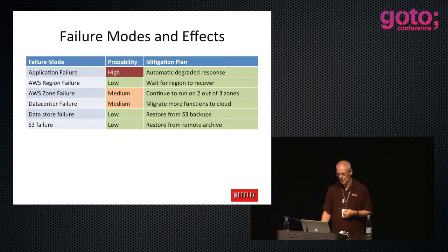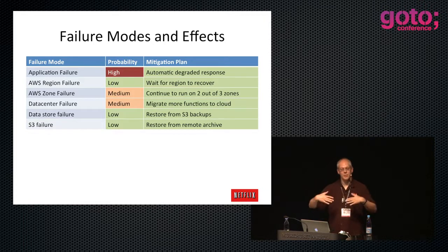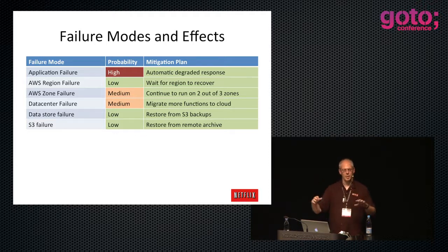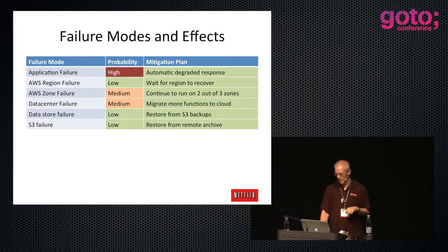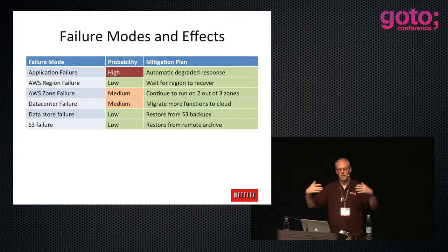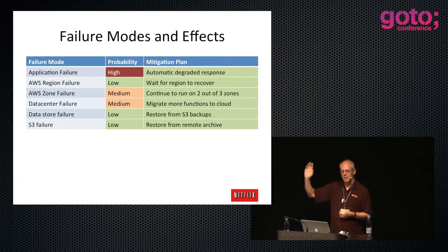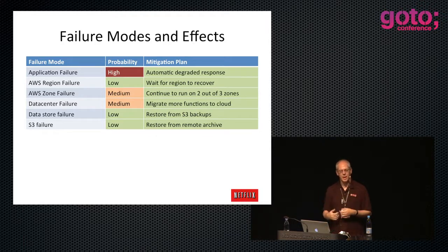If the network between the US and Europe goes down temporarily, everything just keeps working. Both sides work independently. In CAP theorem terms, this is AP - partition tolerant and available. Both sides are available, I can write into both sides, I can continue to sign up members. Later Cassandra's anti-entropy mechanisms kick in and everything gets back in sync. When we lost an entire zone in the US, Europe didn't go down - when the US came back, it just cleaned itself back up.